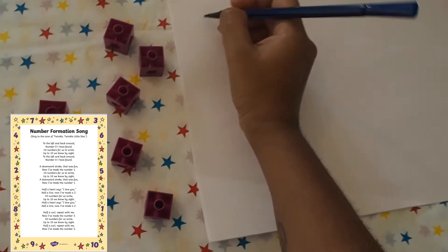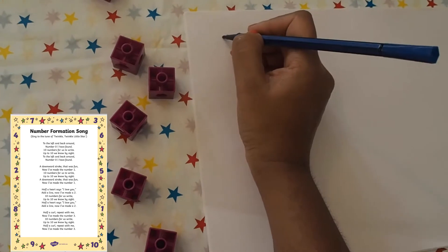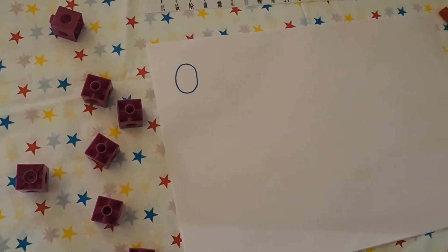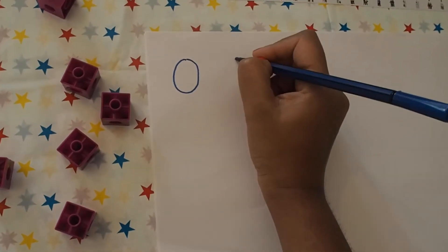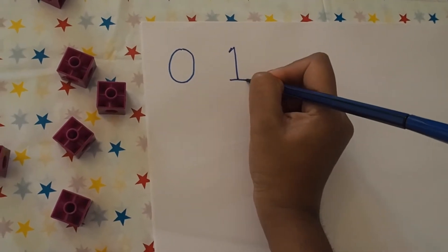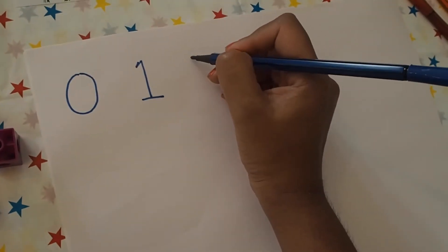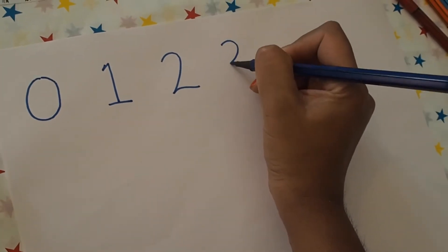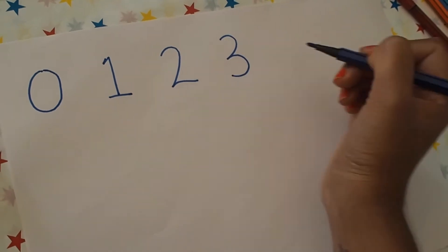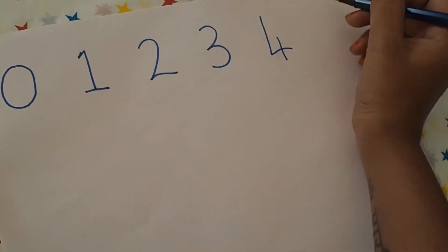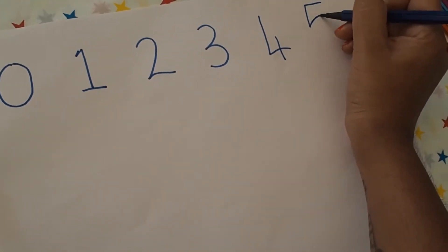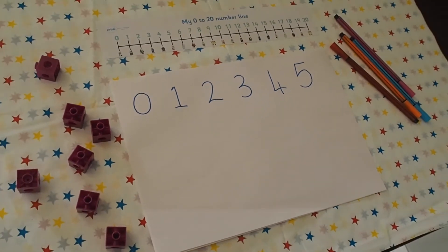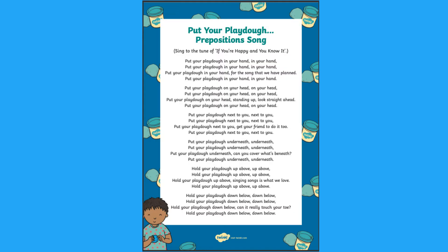To the left and back around, number zero I have found. Ten numbers for us to write, up to ten we know by sight. Work through all of the different numbers and sing the songs as children form all of the numbers.